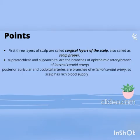Some key points: the first three layers of the scalp are called the surgical layers. The scalp has a rich blood supply because both systems — the internal and external carotid arteries — anastomose over the temple.